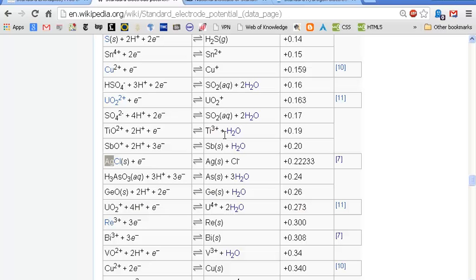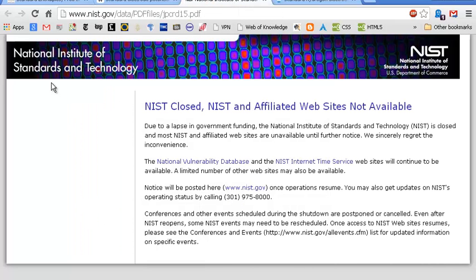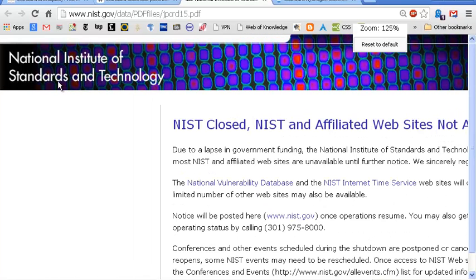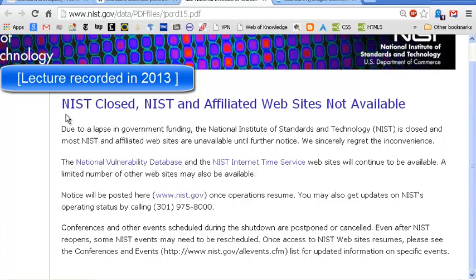Oh, by the way, this is an interesting little historical note. When I actually went to look up some information about electrochemical potentials and activity coefficients, I went to the National Institutes of Standards. That's a government-run site. As you may or may not know, the government has shut down. And, this is what you get if you try to go to the government page. NIST, National Institute of Standards and Technology, is closed. Affiliated websites not available due to a lapse in government funding. So, there you go. That's one of the scientific fallouts from the lack of government funding, which happened last Tuesday, I guess. Just a historical note there.